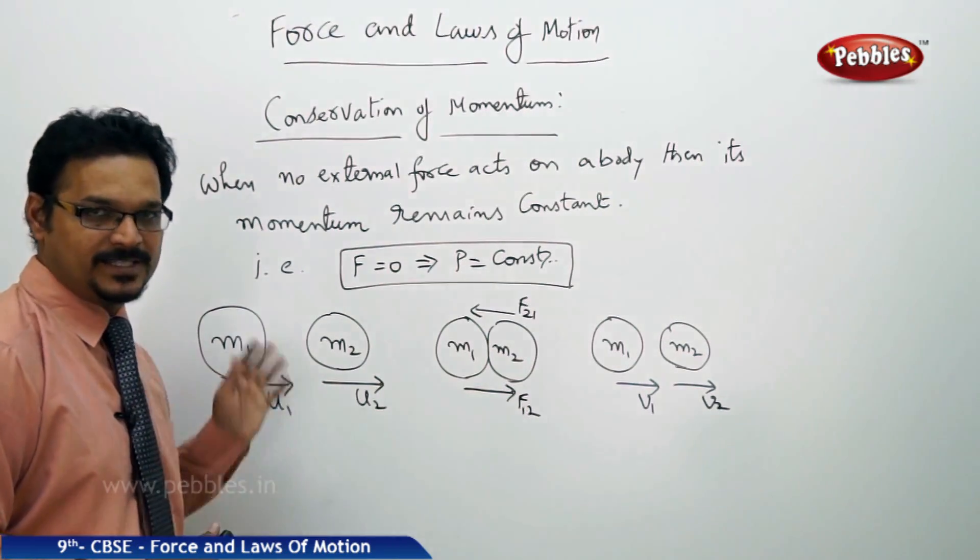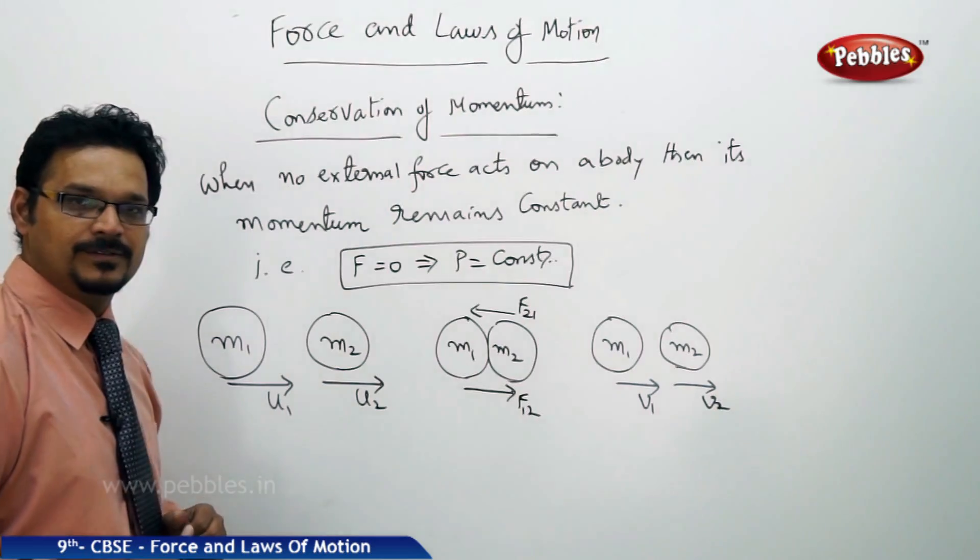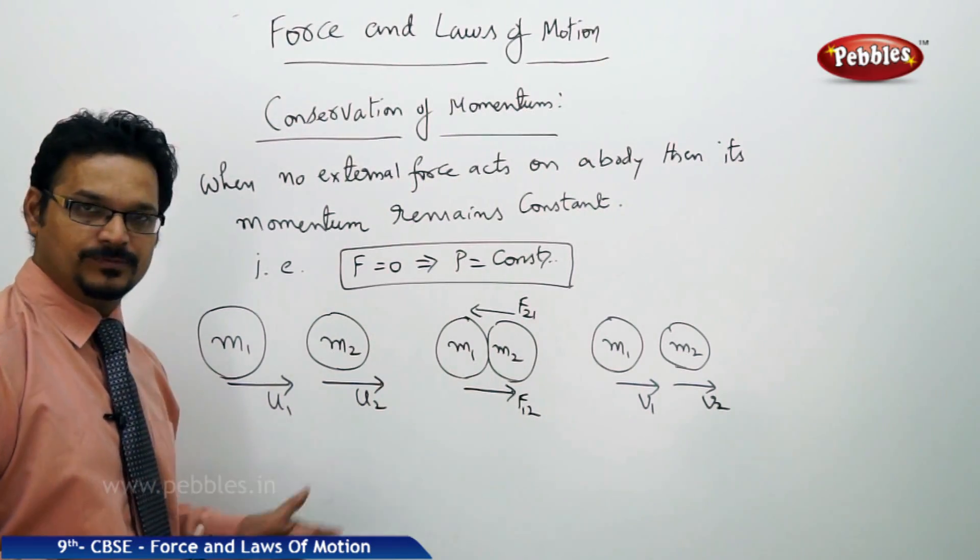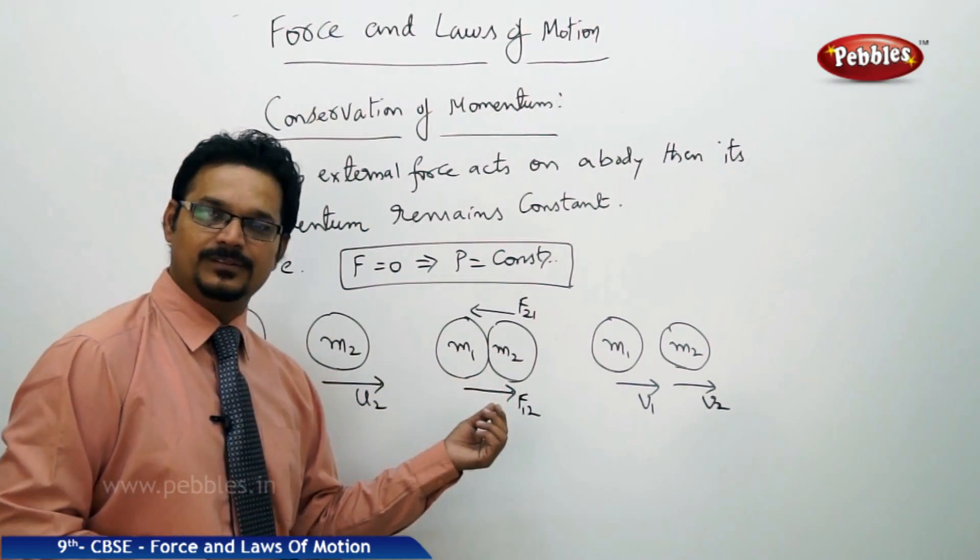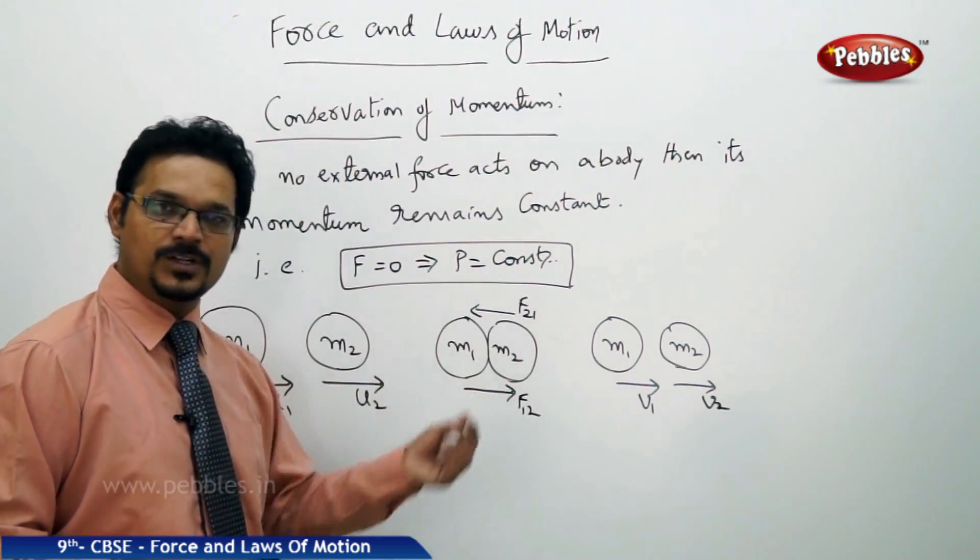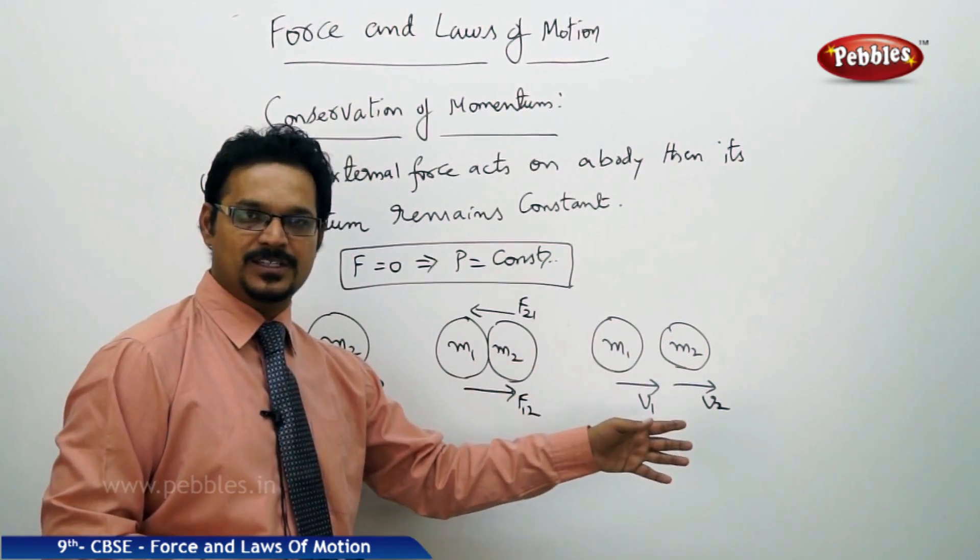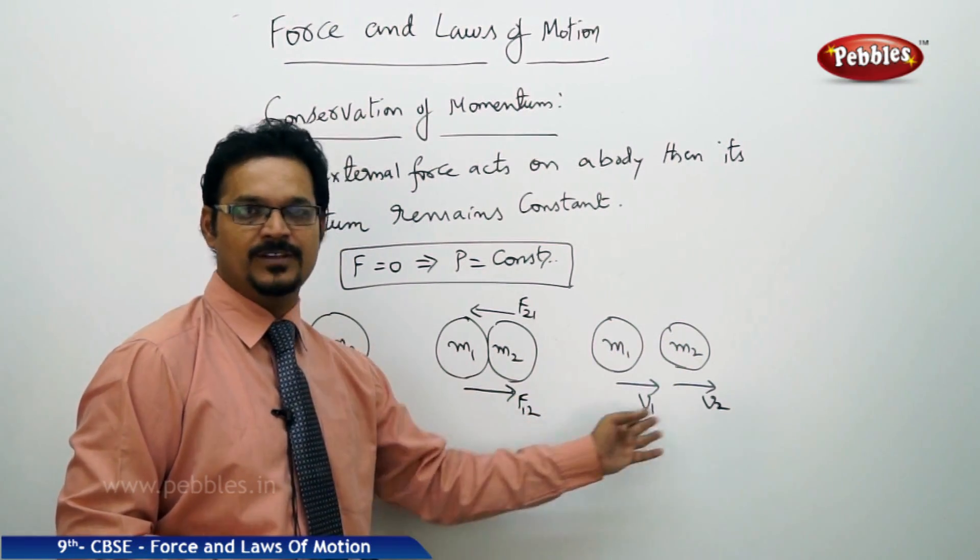There are two bodies of masses m1, m2. Let us imagine two marbles having initial velocities u1, u2. They collide with each other and after the collision they move in the same direction with different velocities v1, v2, we say final velocities.